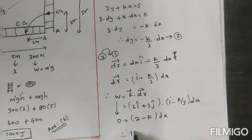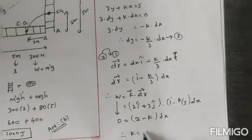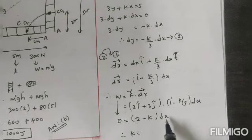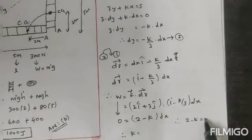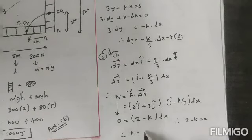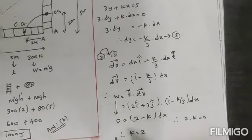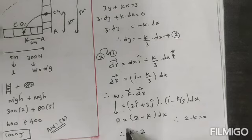I can write 0 is equal to 2 minus k into dx. Therefore 2 minus k is equal to 0. Therefore k is equal to plus 2. So k is equal to 2 is the answer.